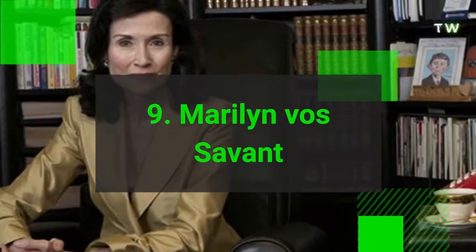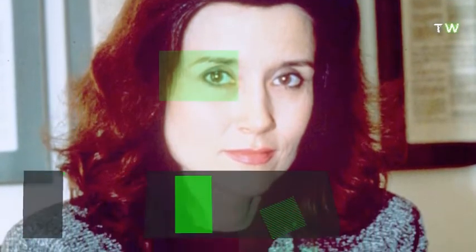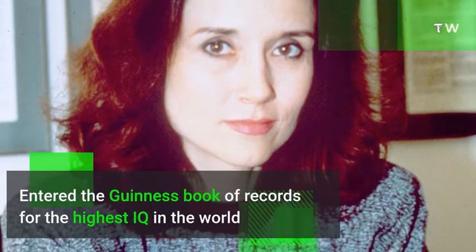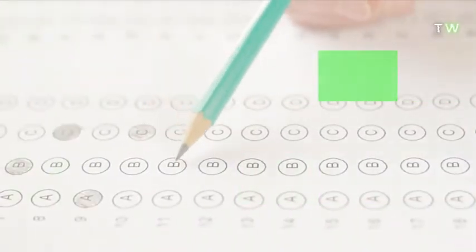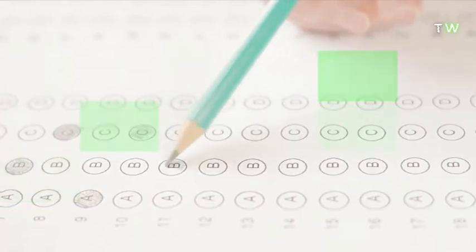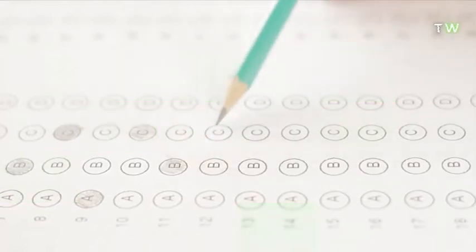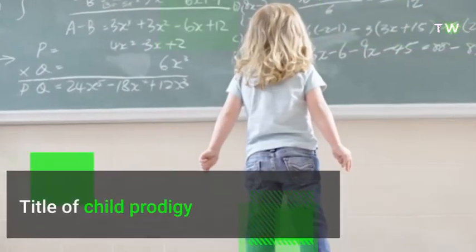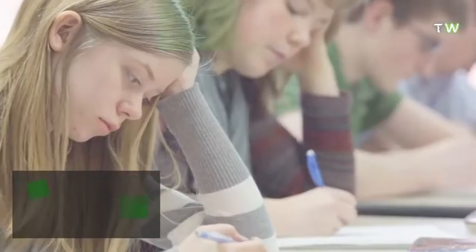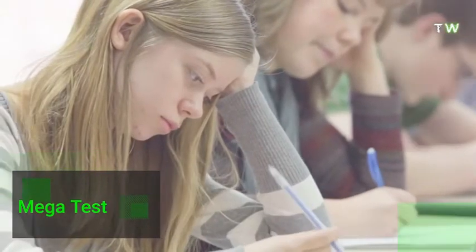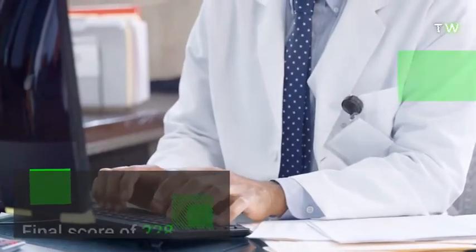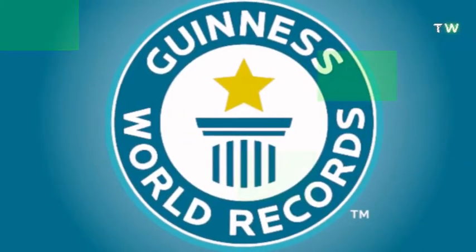Number 9. Marilyn Vos-Savant was born in 1946 and entered the Guinness Book of Records for having the highest IQ in the world, beating Kim Ung-yong. Taking the Stanford-Binet test at only 10, Savant received a score that would easily allow her title of child prodigy. Subsequently, she also took the mega test, and the two scores were evaluated by a psychologist to give her a final score of 228.